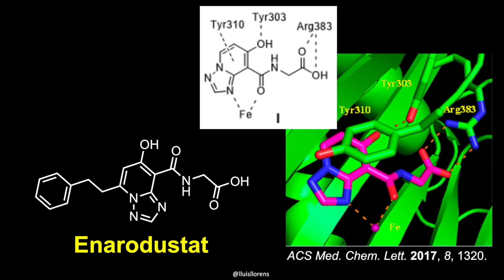Enarodustat is a nonchiral compound that contains a phenyl ring attached to a triazolopyridine through a 2-carbon alkyl chain. The molecule contains a carboxylic acid, an amide bond, and a hydroxyl group.